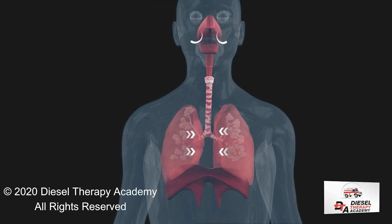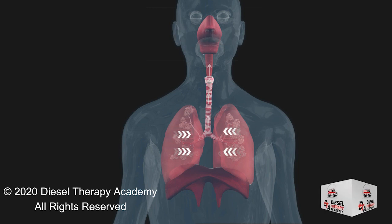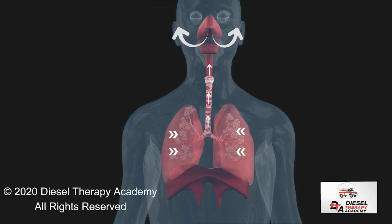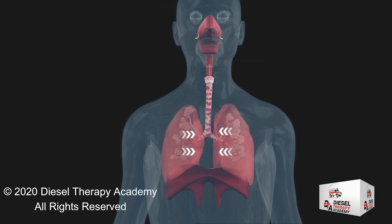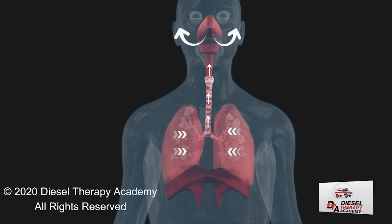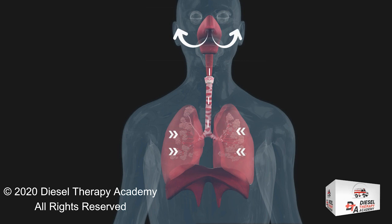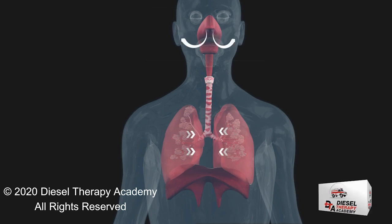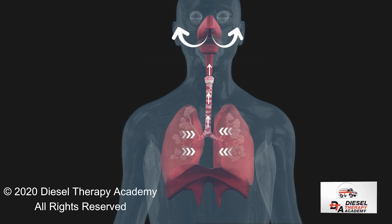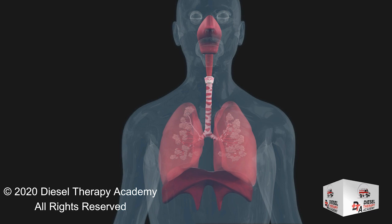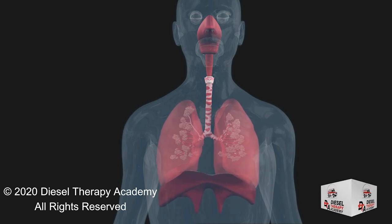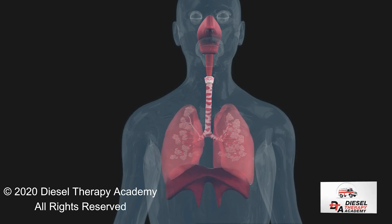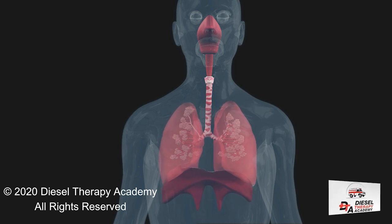Expiration, or exhalation, is the process of letting air out of the lungs during the breathing cycle. During expiration, the relaxation of the diaphragm and elastic recoil of tissue decreases the thoracic volume and increases the intra-alveolar pressure. Expiration pushes air out of the lungs. We breathe out through positive pressure.